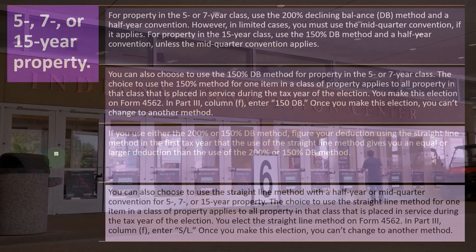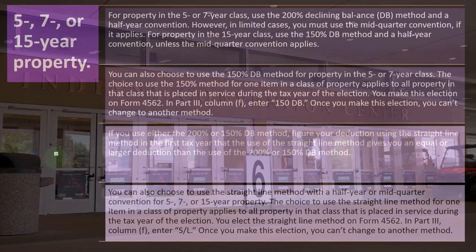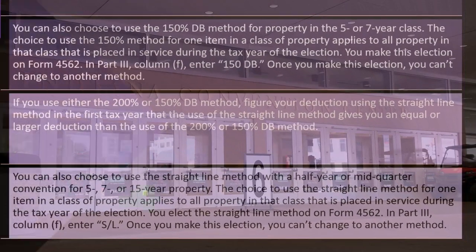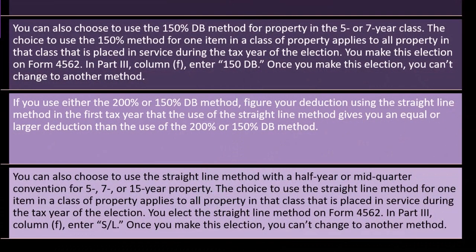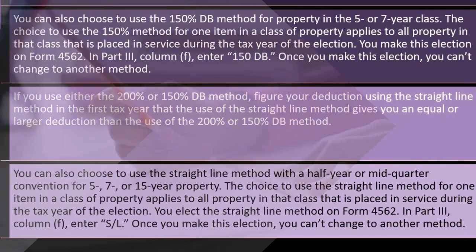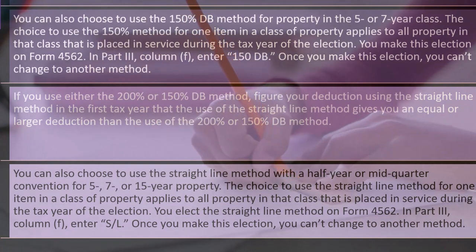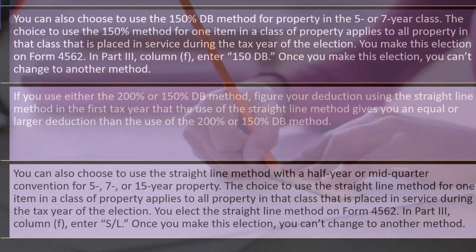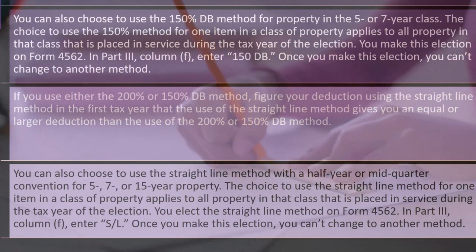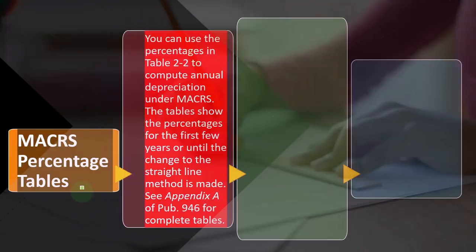You can also choose to use the straight-line method with a half-year or mid-quarter convention for five, seven, or 15-year property. So you have the option: 200% is probably best most of the time, but sometimes maybe you want to default down to 150%, or possibly all the way down to straight line if you think you'll make more money in future periods. The choice to use the straight-line method for one item in a class applies to all property in that class placed in service during the tax year. You elect the straight-line method on Form 4562, Part III, Column F — enter 'S-L'.